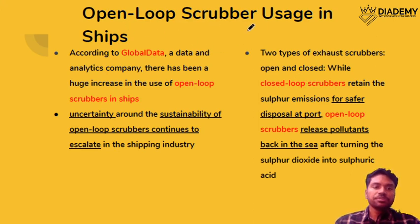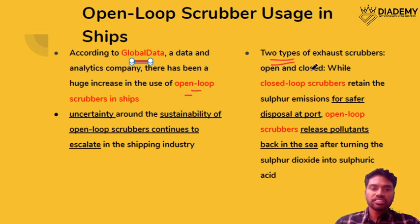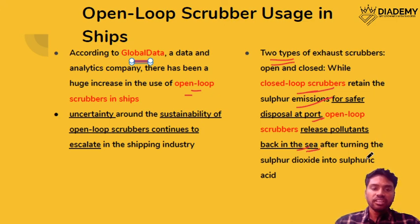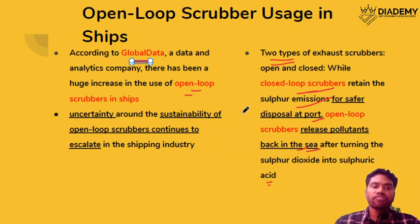The next topic is open loop scrubber usage in ships. According to Global Data, an analytical company, there has been a huge increase in open loop scrubbers. There are two types of exhaust scrubbers in ships: closed scrubbers, which retain sulphur emissions (SOx) for safe disposal at port; and open loop scrubbers, where pollutants are sent back into the sea after turning into sulphuric acid. Since sulphuric acid is itself a pollutant and there are no established facts that this is safe, this has been in the news.